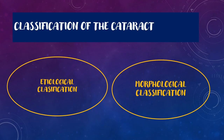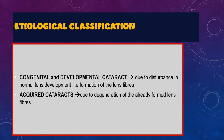Now coming to the classification of the cataract. There are two classifications: one is based on how the cataract develops, which is called an etiological classification, and then we have a classification based on how the cataract looks, which is called a morphological classification.